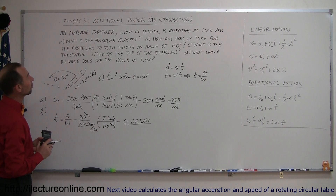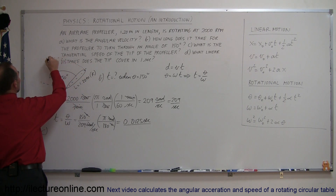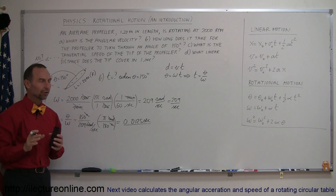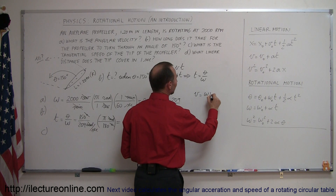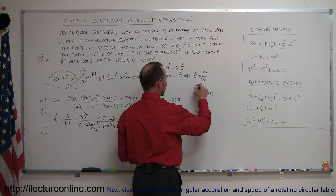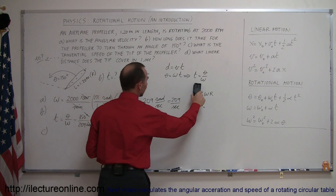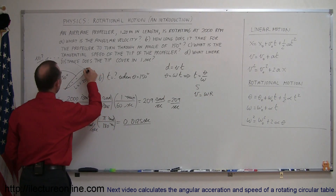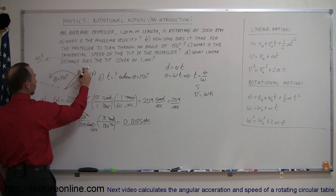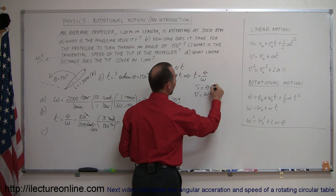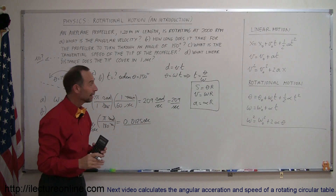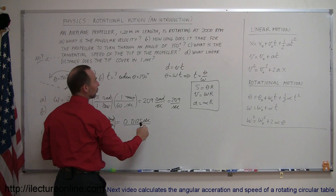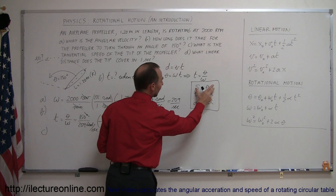Now for Part C: we need to find the tangential speed of the tip of the propeller — how fast is the very tip moving? We need a conversion factor. The tangential velocity v equals omega times the radius r. Similarly, the arc length s equals theta times r, and the tangential acceleration equals alpha times r. The relationship between linear units along the edge of the circular motion and the rotational units theta, omega, and alpha is made using these three equations.